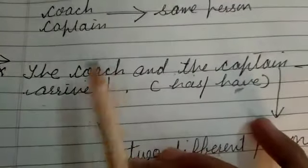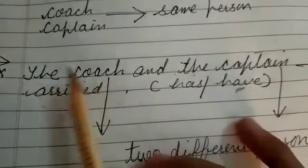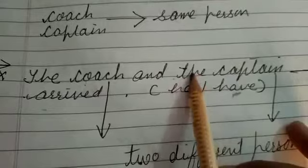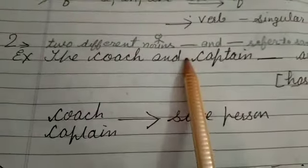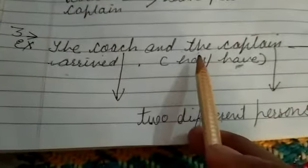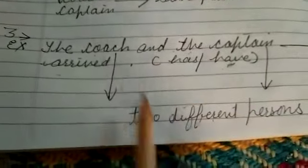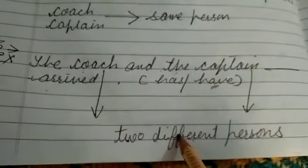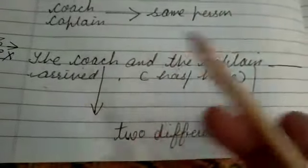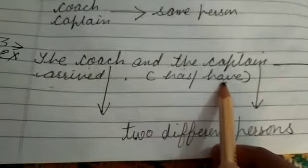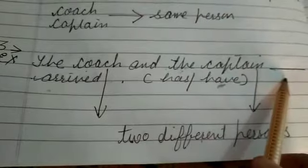Since 'the' appears before 'captain' after 'and,' we can say these two persons are different. So the subject is plural. If the subject is plural, we apply the plural verb — that is 'have.' So: The coach and the captain have arrived. Just remember: if any article (a, an, or the) is used after 'and,' the subject becomes plural.